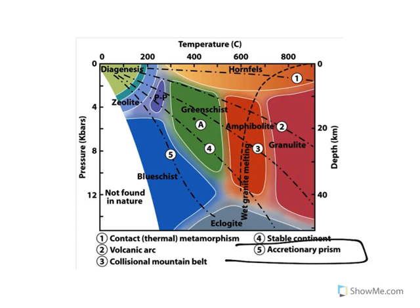And then the fifth one, the accretionary prism. Remember the accretionary prism, that's the accretionary wedge that occurs if I have a continent and then I have ocean floor subduction. Remember, this scrapes off the sediment that sits there.